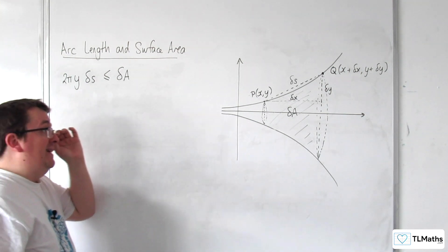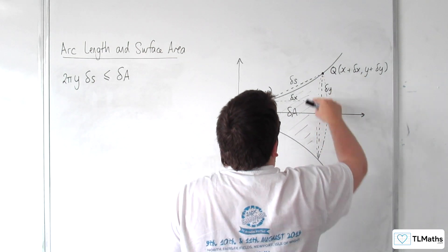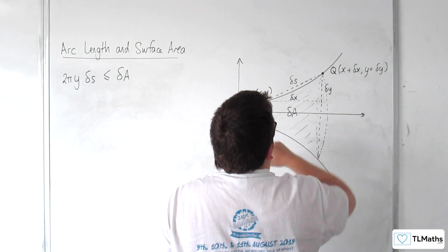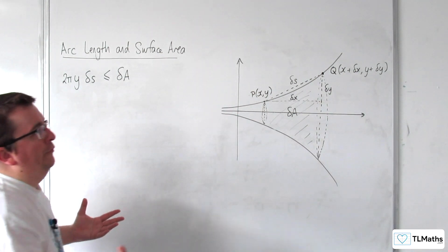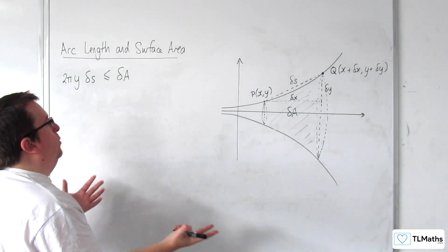Now you could also estimate it by looking at the circumference of this side and then multiplying that by delta S. But of course, if we've just got a cylinder, then there would be equal.